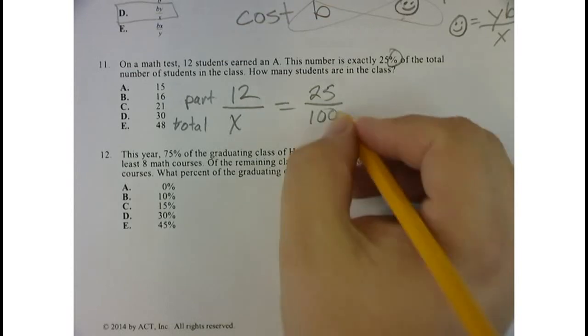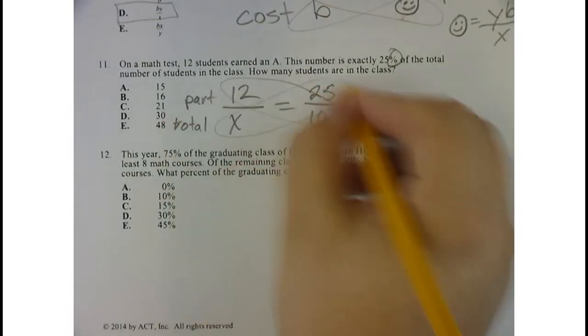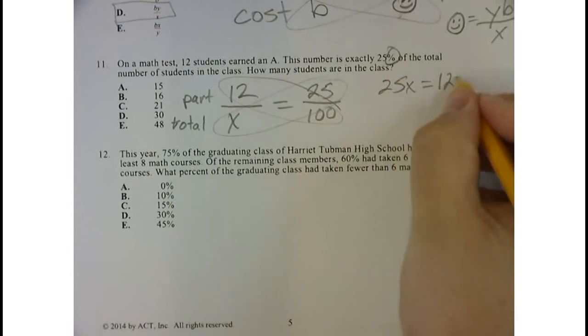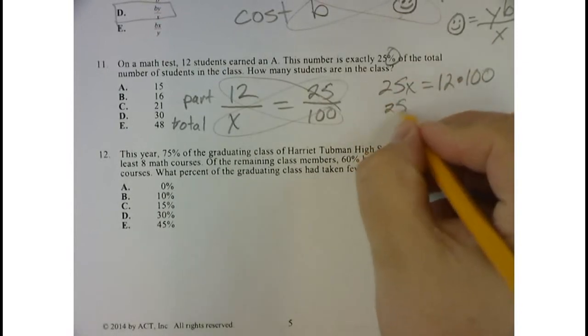This is a proportion problem. So 25x is equal to 12 times 100, or 25x is equal to 1,200.